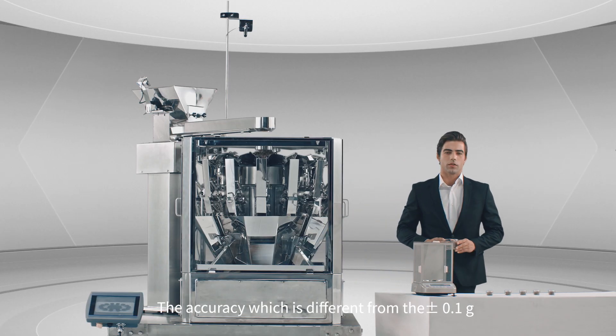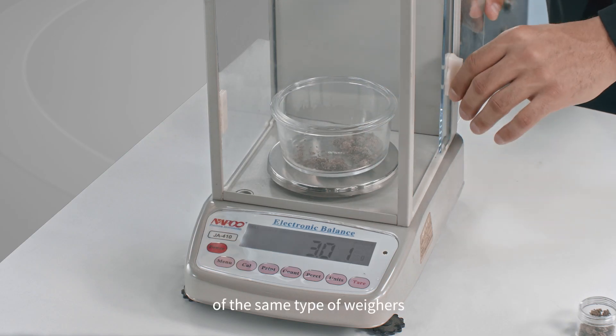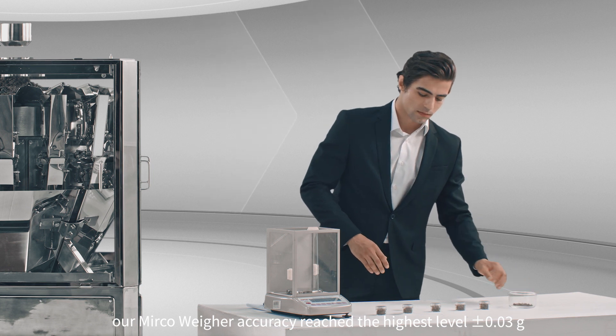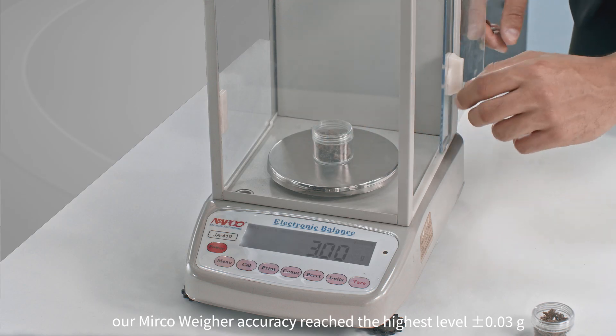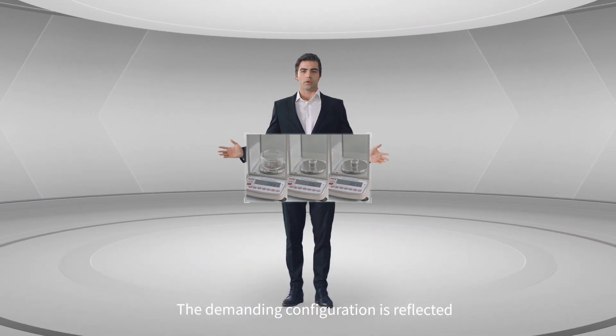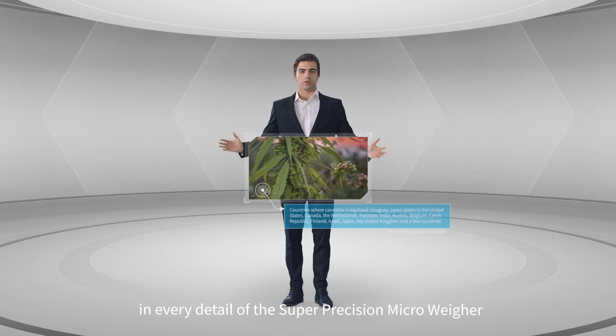The accuracy is different from the ±0.1 gram of the same type of weighers. Our micro-weigher accuracy reaches the highest level, ±0.03 gram at a certain speed and weight. The demanding configuration is reflected in every detail of the super-precision micro-weigher.